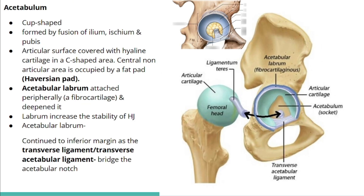We will discuss the articular surfaces of each component, starting from the acetabulum. The acetabulum is cup-shaped and it is formed by the fusion of the ilium, ischium, and pubis. This articular surface is covered by C-shaped hyaline cartilage, but the central part is not covered by cartilage.